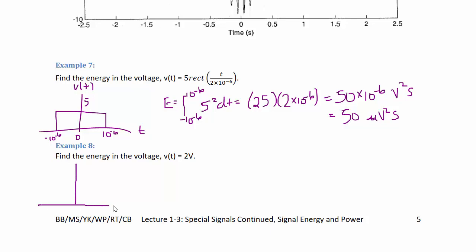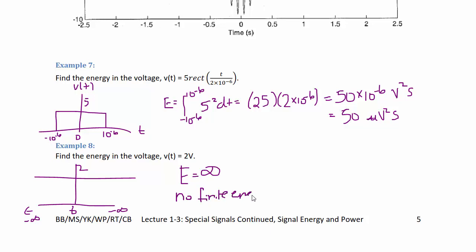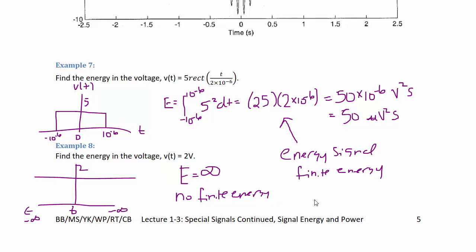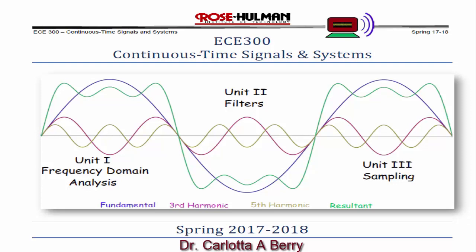Now we're going to find the energy in the voltage v(t) = 2 volts — a constant 2 volts for all time, going all the way to negative infinity and positive infinity. What you should notice immediately is that the energy is going to be infinite; there is no finite energy. So we now have a new vocabulary word: an energy signal. Any signal that has finite energy is called an energy signal. In the case of these two examples, the rect example would be an energy signal. This concludes Lecture 1-3 on special signals, signal energy and power.